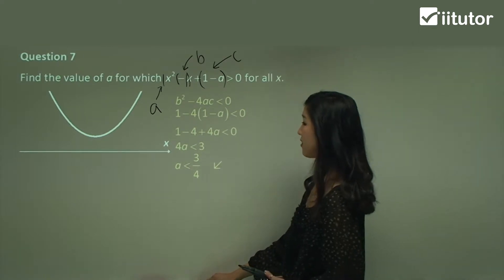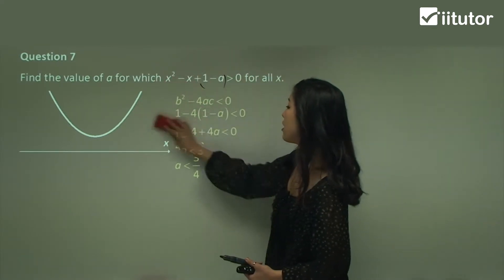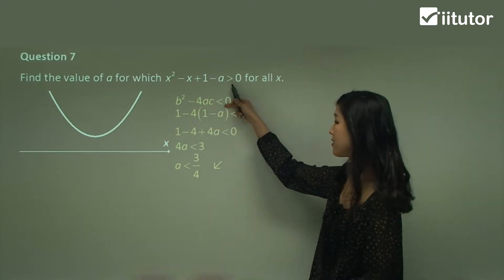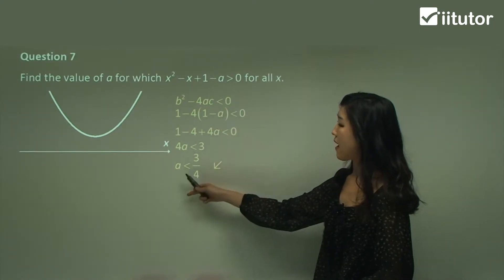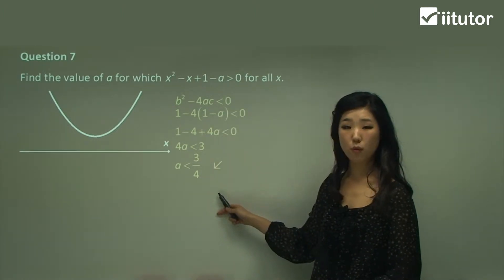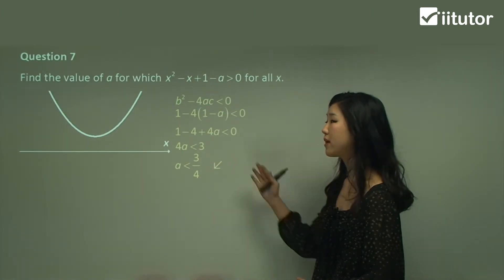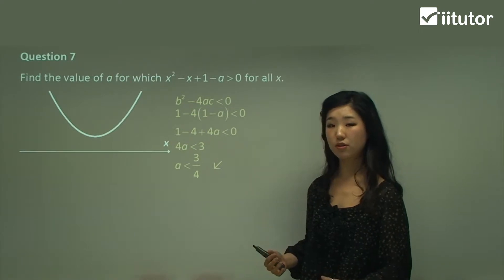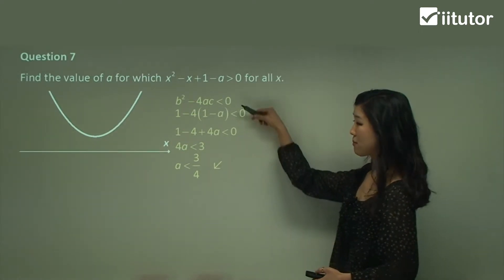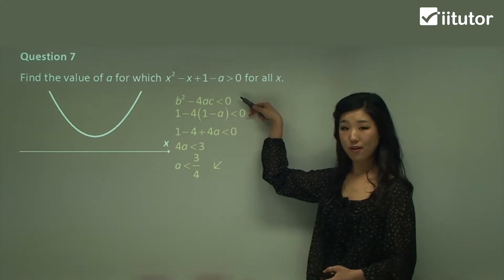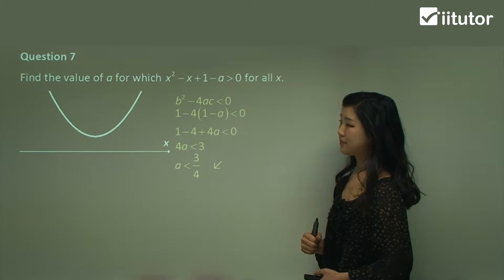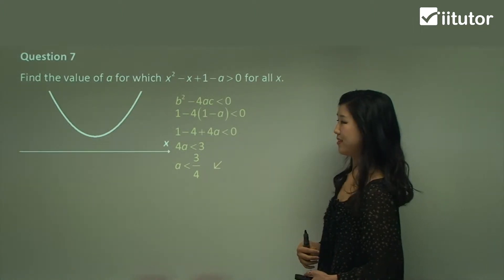So a is less than 3/4, and that's the answer, because it asks us to find the values of a. For this quadratic function to be greater than zero, the value of a must be less than 3/4. If it's greater, it's probably not a positive definite function. Please remember that the discriminant must be less than zero — that's our solution for question 7. Now we can move on to the next question.